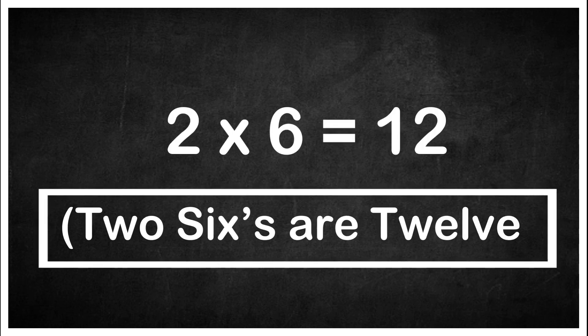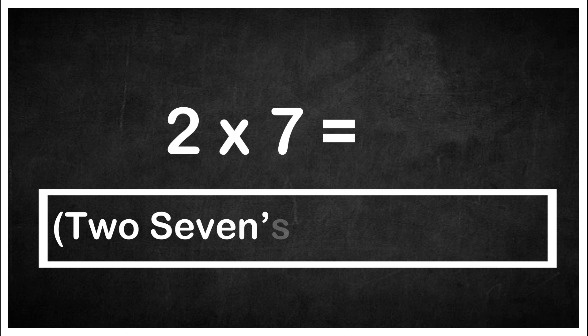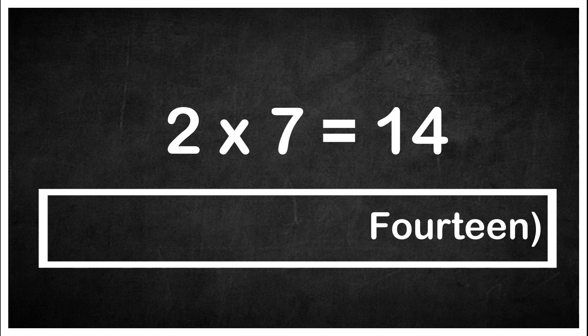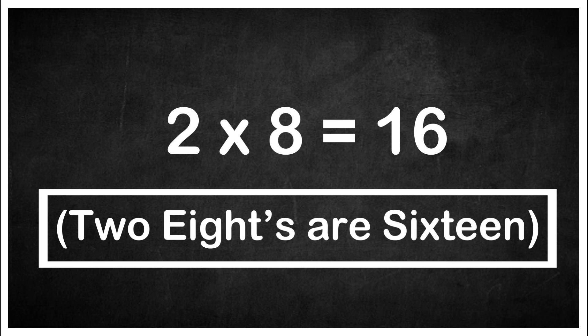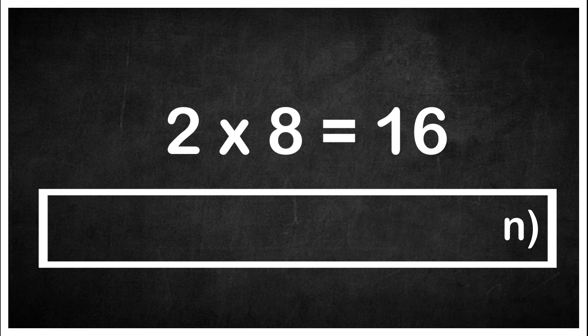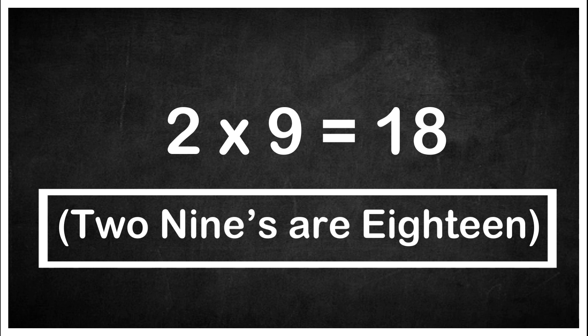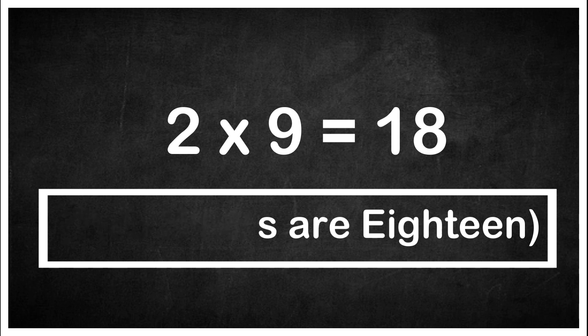Two sixes are twelve. Two sevens are fourteen. Two eights are sixteen. Two nines are eighteen. Two tens are twenty.